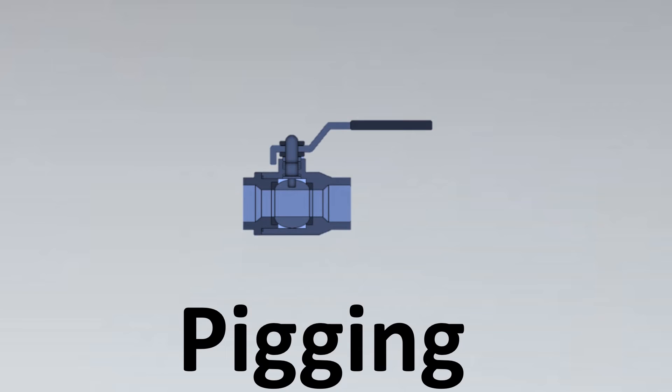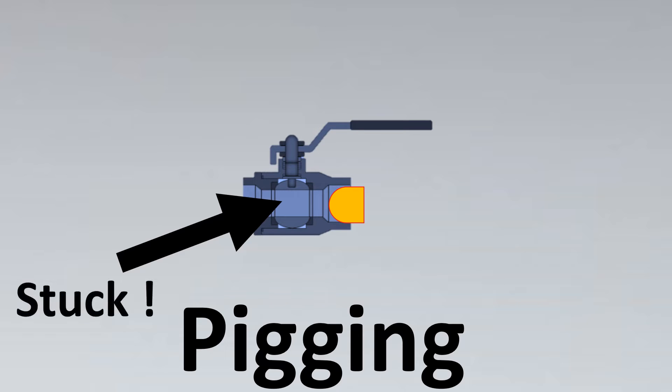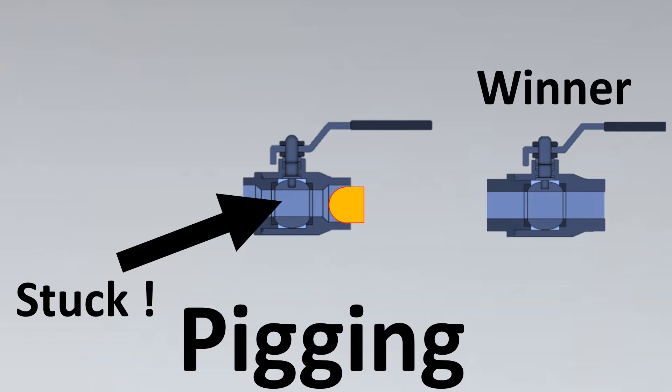Now, how does this have a consideration with our full bore or reduced bore? Imagine this is your reduced bore valve and we insert the pig. What is going to happen? Your pig is going to get stuck inside this valve because the pig size would be that of the line ID, but the reduced bore would have a lesser size, so the pig won't be able to pass through the valve and it would get stuck. Whereas if you take a full bore valve, which is the winner here, the entire pig would be able to pass through the valve. So for such cases we need to consider full bore valves.